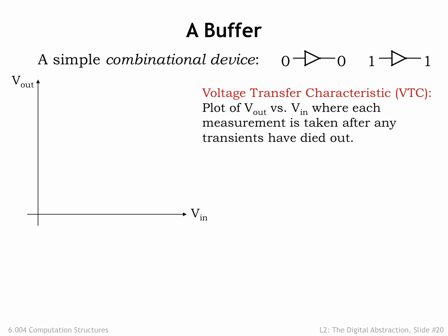The resulting curve is called the voltage transfer characteristic of the buffer. For convenience, we've marked our signal thresholds on the two axes.